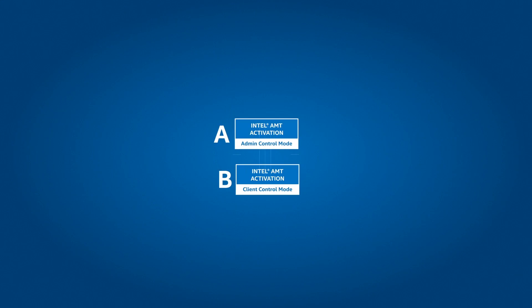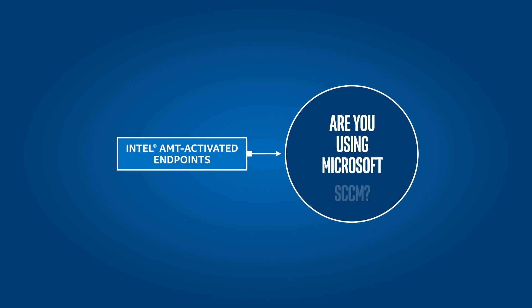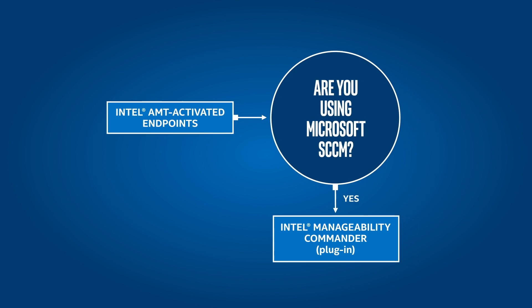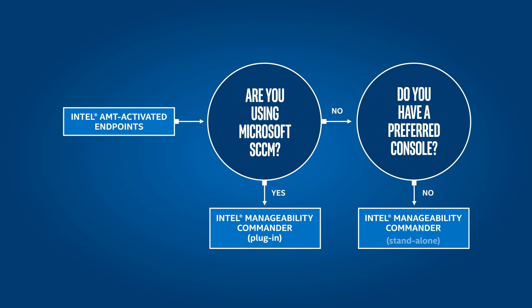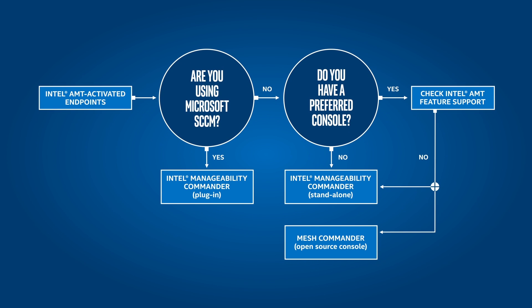Once you have AMT-activated endpoints, you need a way to control them. If you are using Microsoft's System Center Configuration Manager, the free Intel Manageability Commander plugin is a great solution for executing out-of-band remote management use cases. If you do not have a preferred console, Intel Manageability Commander can also function as a standalone tool. Otherwise, you must check for AMT feature support with your current management software vendor. If AMT features are not supported, Intel Manageability Commander remains an option, as well as the Mesh Commander open-source console, which some software vendors have also integrated into their respective products.